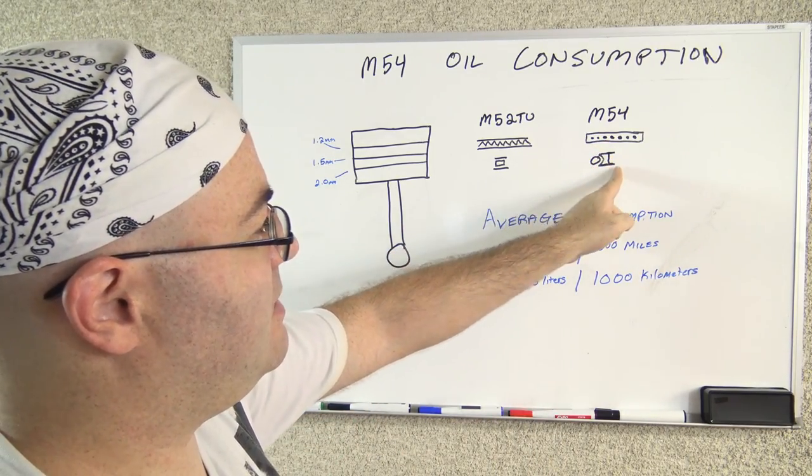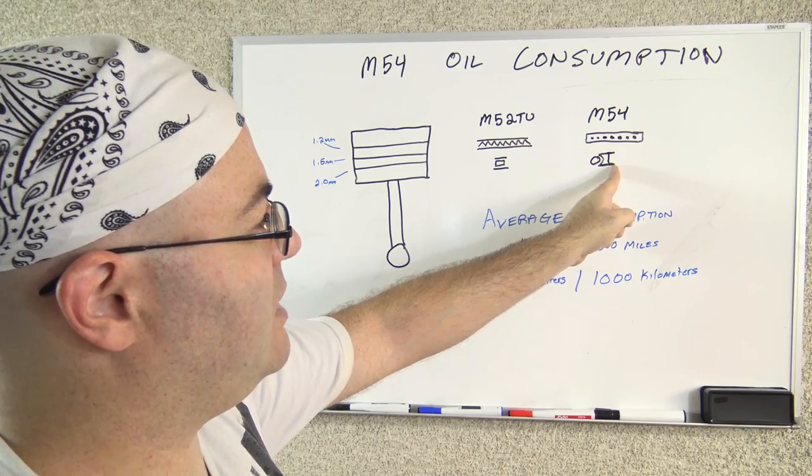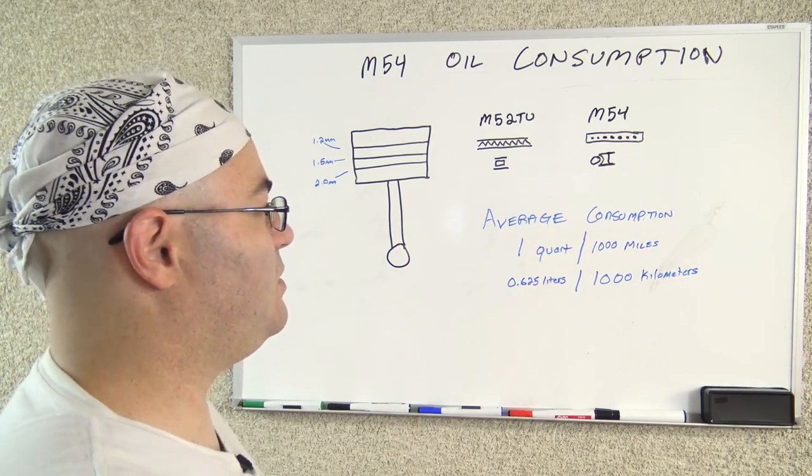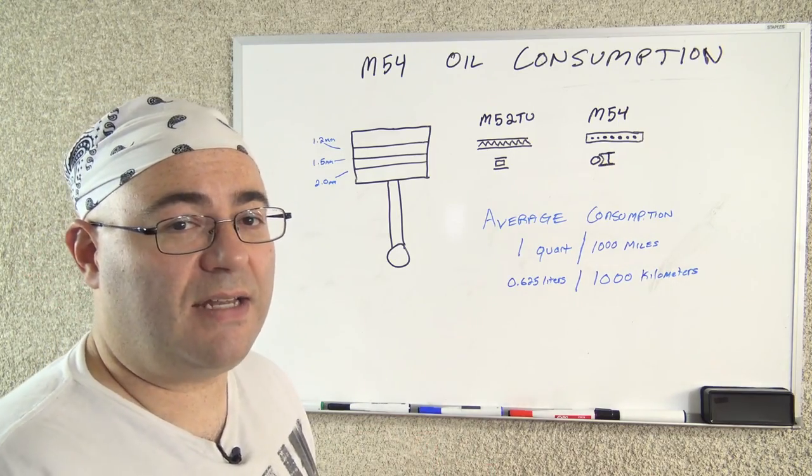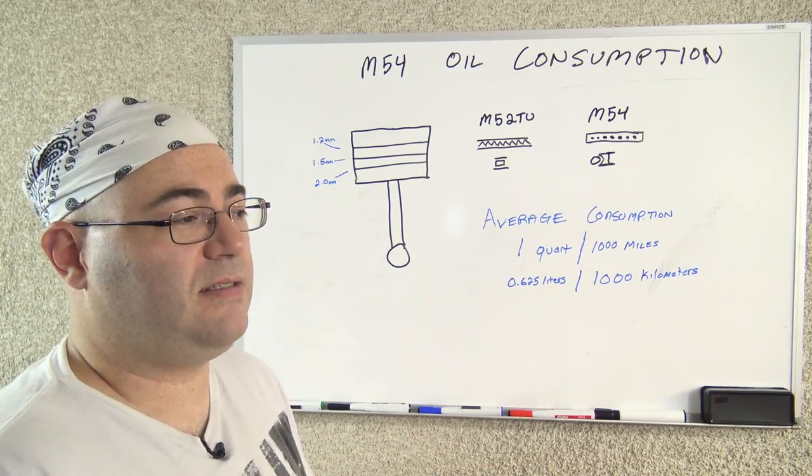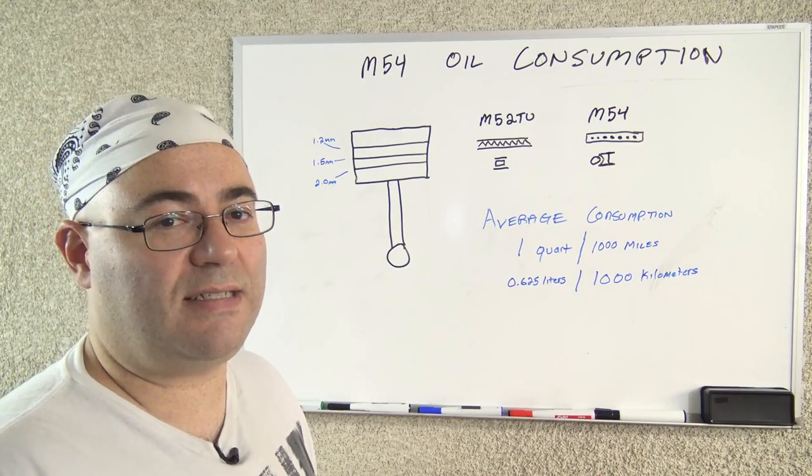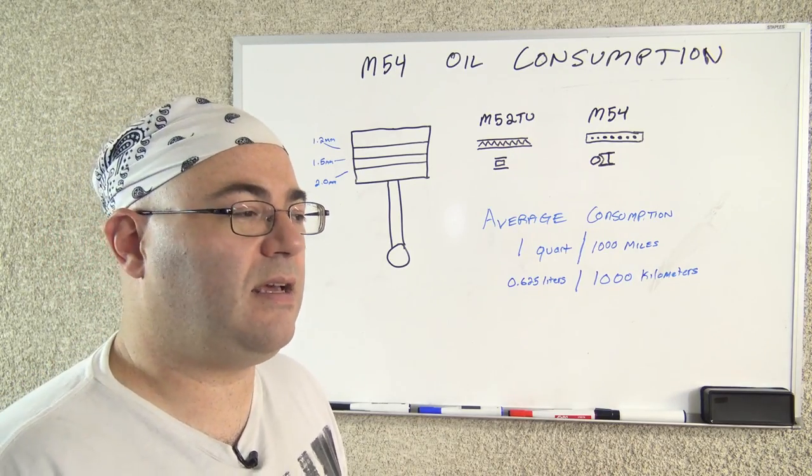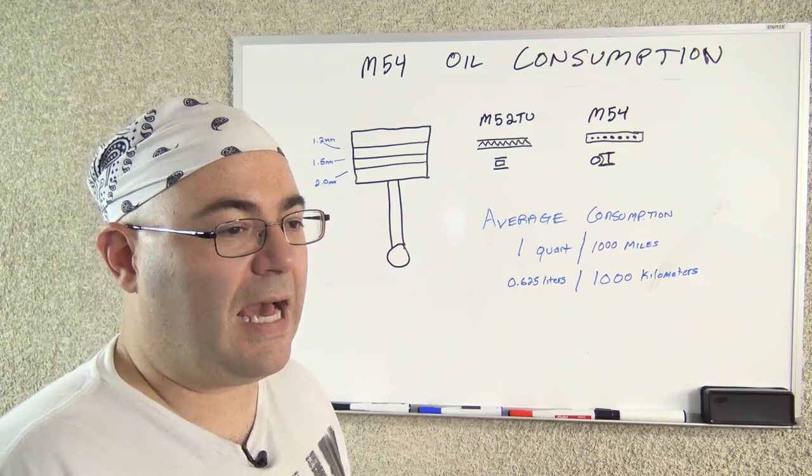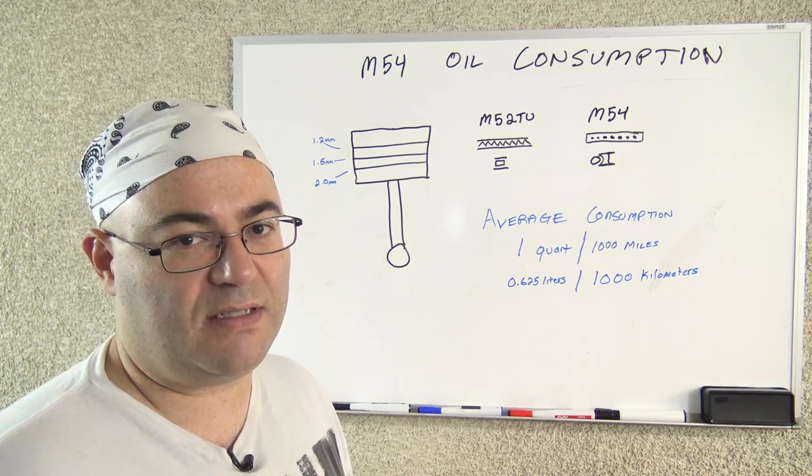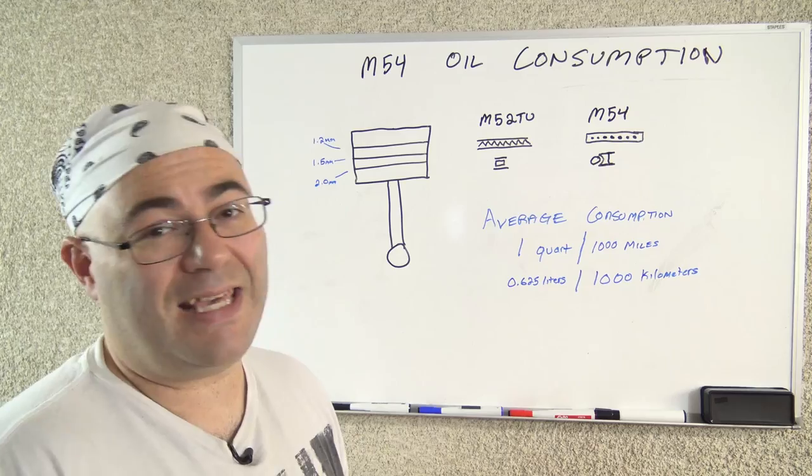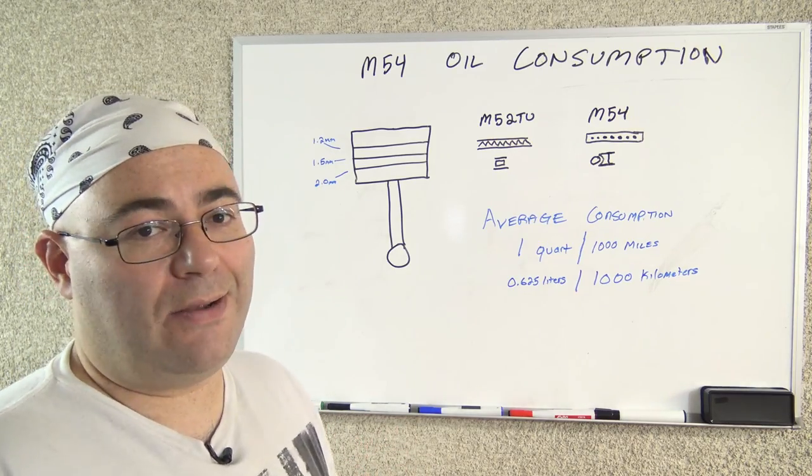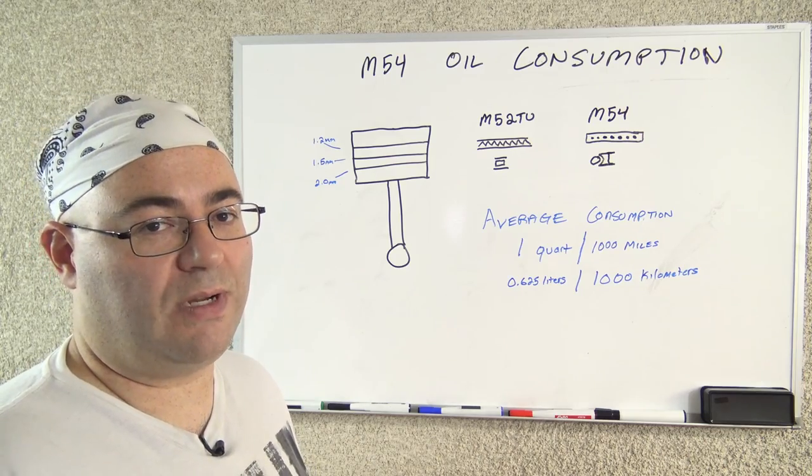So the problem is, is that this oil control ring actually wears down prematurely. And once that happens, once you get to a certain point, you start consuming oil. There's a lot of anecdotal evidence out there that suggests that this process happens like almost suddenly. And I saw a lot, I've seen a lot of people report that it happens after they change their CCV system for the first time. I can't really explain why that is, what brings that on. I don't know enough about oil control rings.